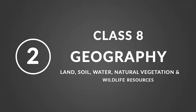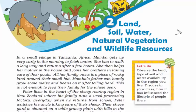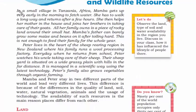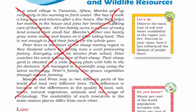Welcome to Class 8 Geography, Resources and Development, Chapter 2: Land, Soil, Water, Natural Vegetation and Wildlife Resources. In this chapter, we will read about the five major natural resources from which we get ample things in life. The initial long paragraph is just a small story to grab your interest, so let's go on to the more important aspects.